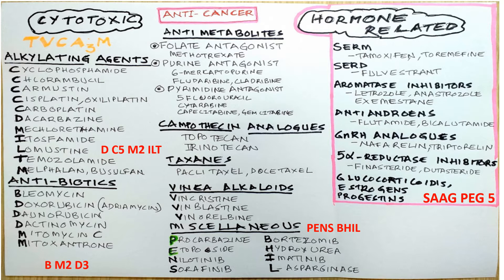Among the alkylating agents we have cyclophosphamide, chlorambucil, carmustine, cisplatin, oxaliplatin, carboplatin, dacarbazine, mechlorethamine, ifosfamide, lomustine, temozolomide, melphalan, and busulfan. Among the antibiotics we have bleomycin, doxorubicin (also called adriamycin), daunorubicin, dactinomycin, mitomycin C, and mitoxantrone.